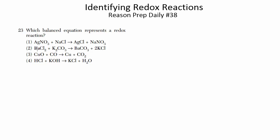So how do we do this? What you need to determine is if there's a change in the oxidation states of these elements as you go from reactants to products. What we need to do is look at each of the elements of each of these reactions, find their oxidation numbers, and see if they change as you move from left to right.